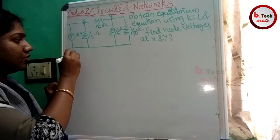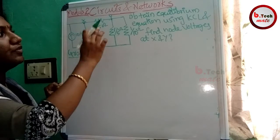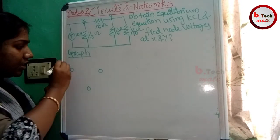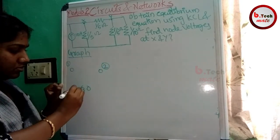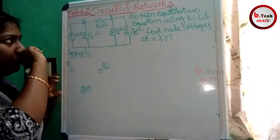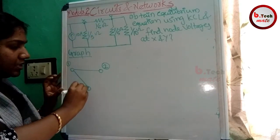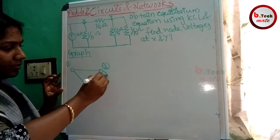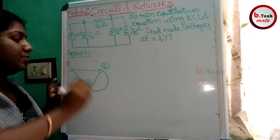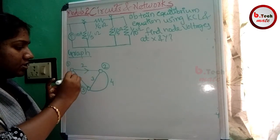Looking at the graph, we can write the two common factors. There are 3 nodes — mark the nodes. Sources are present. We have branches labeled 1 by 5, and there are 4 branches labeled 1, 2, 3, and 4 with their respective directions.